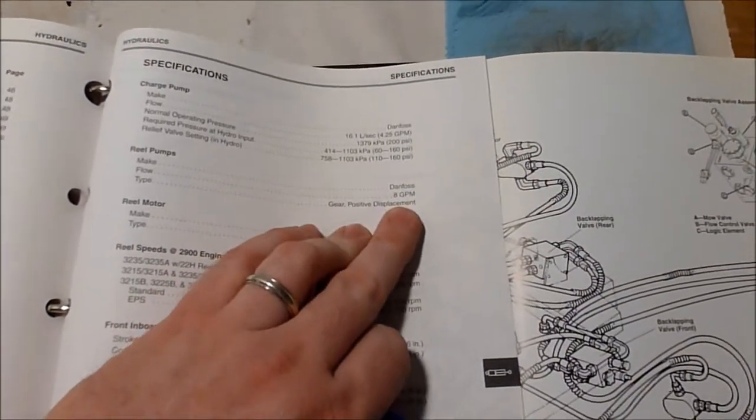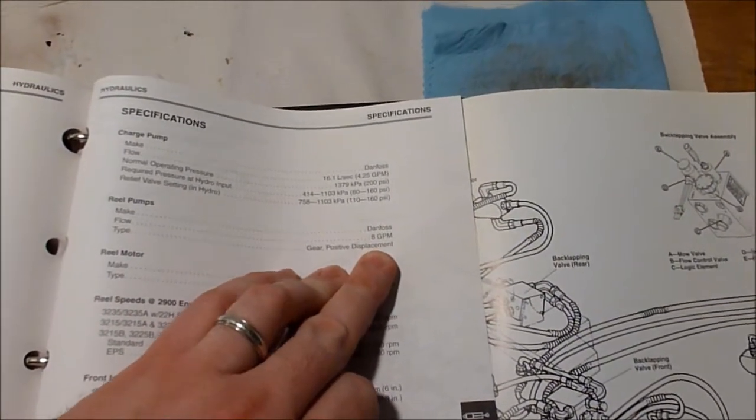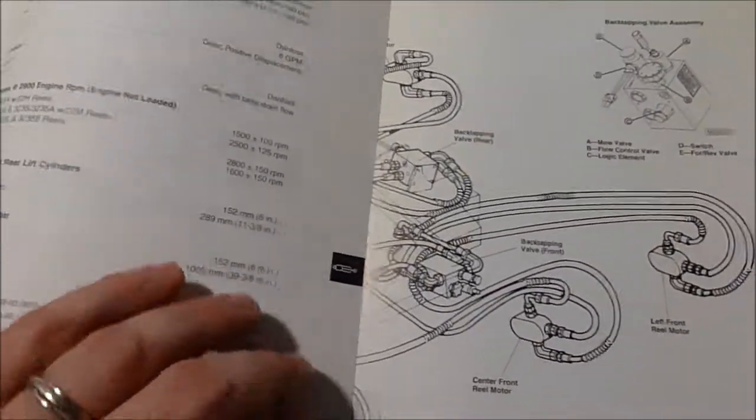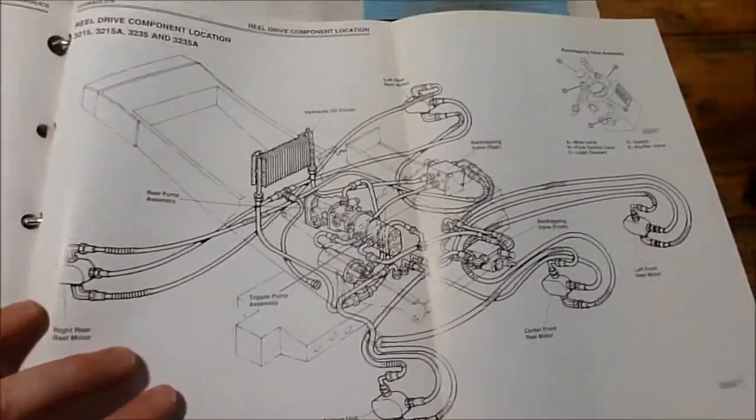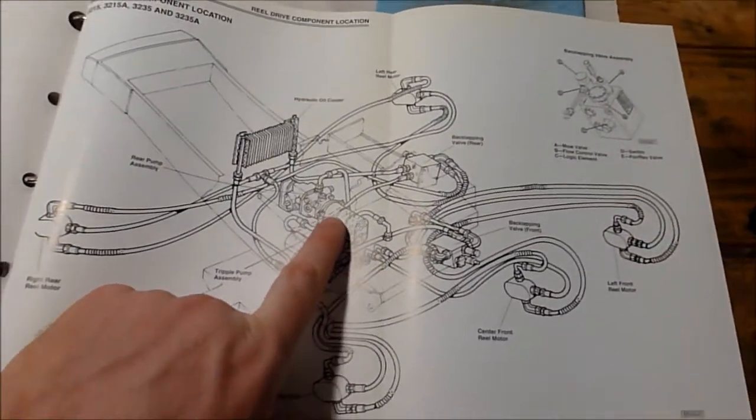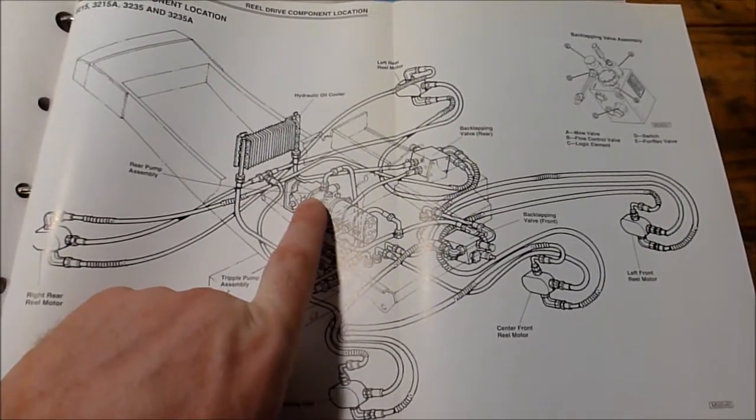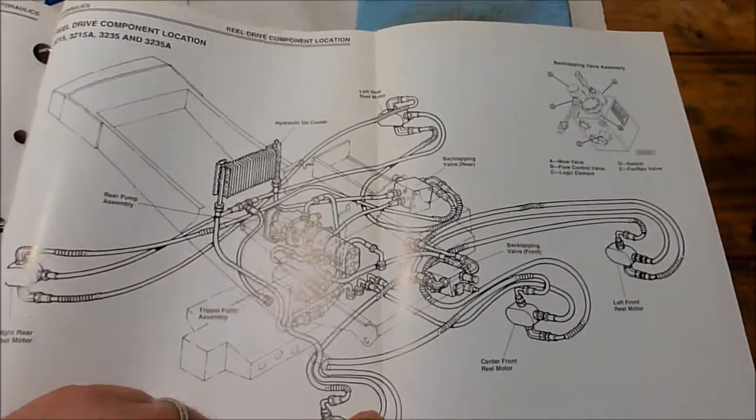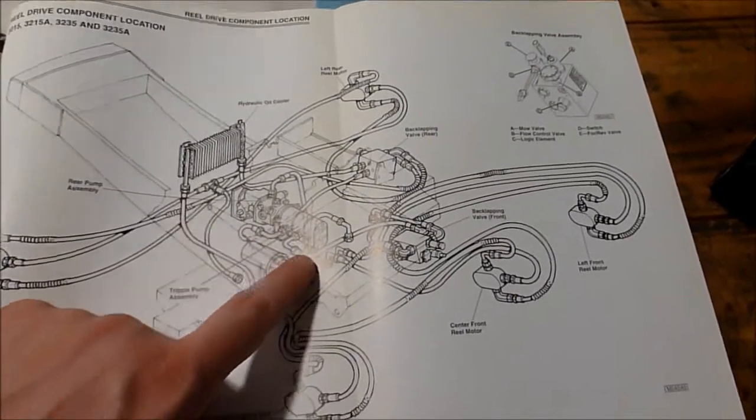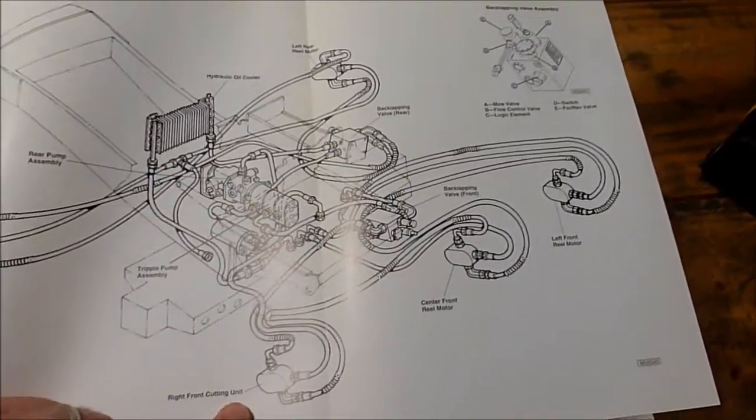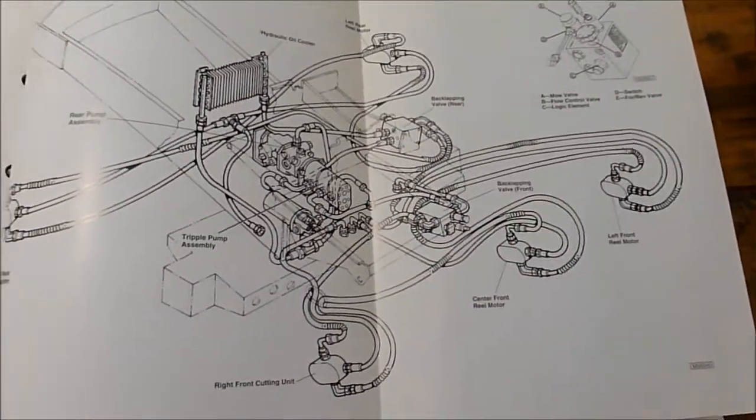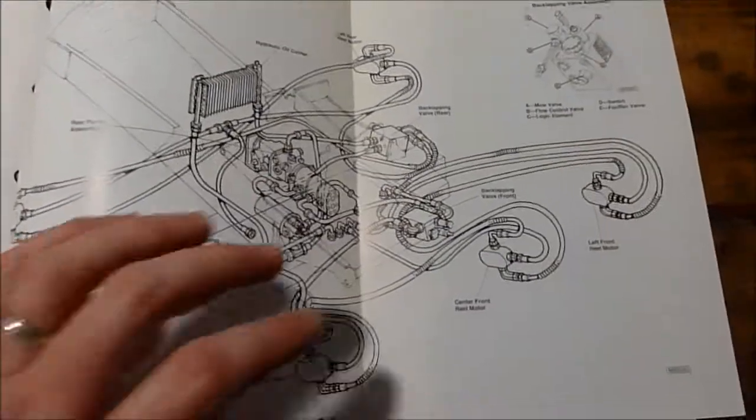We have the reel motors and the reel pumps. There's three pumps. In sequence, each one is eight gallons per minute, and the reel motors are Danfoss motors. This is the whole hydraulic system, the reel drive system. You have the triple pump assembly: the charge pump and then one, two, three triple pumps. Those pumps power the reels. You can trace those lines to different valves and then to the five different motors.